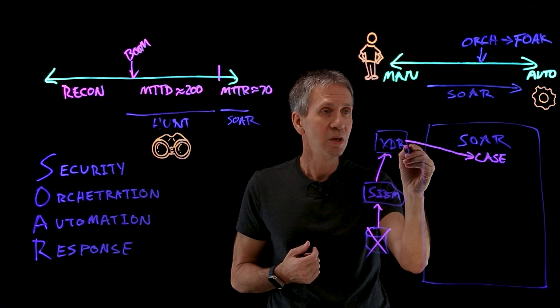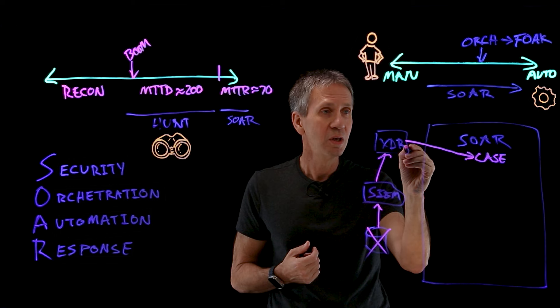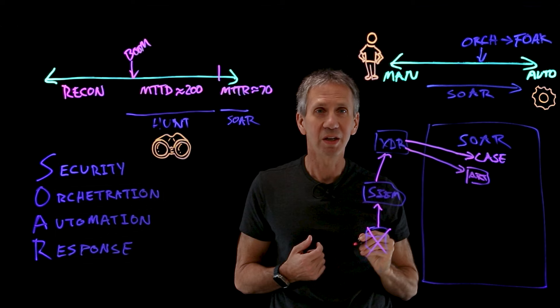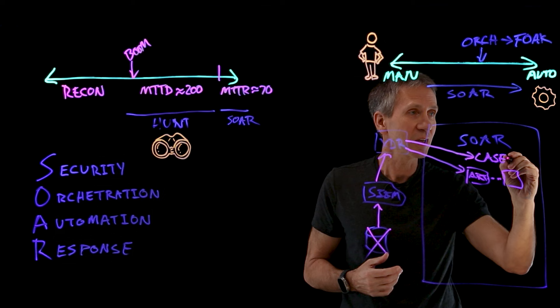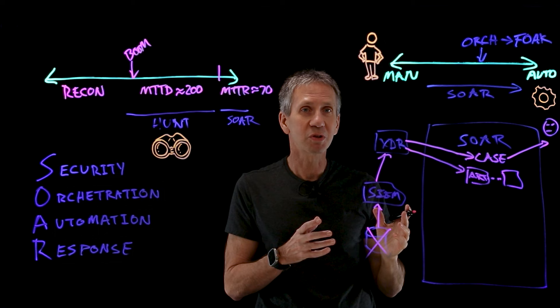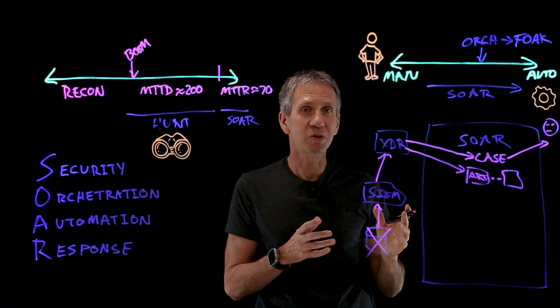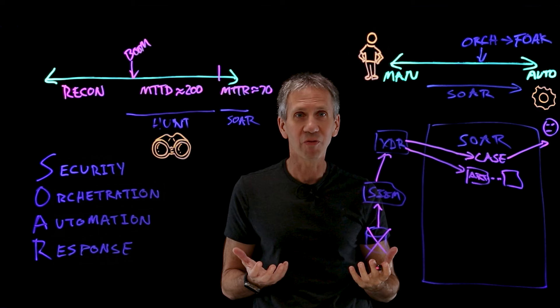Another thing we would do is capture artifacts — information about the attack. So we could have lots of artifacts, indicators of compromise, this kind of information. We're going to take all of that information, attach it to the case, and then assign that case to an analyst. This analyst is going to be responsible for following through. The analyst then takes the SOAR system, which has this case management and has detected and attached the appropriate artifacts. Now they have the information they need to go do the investigation.